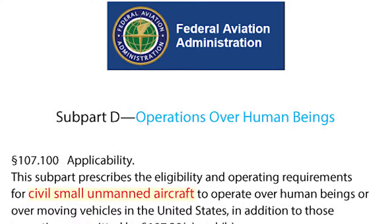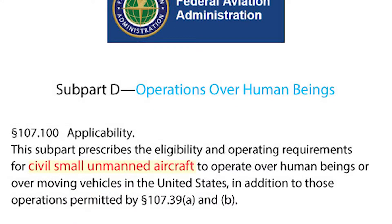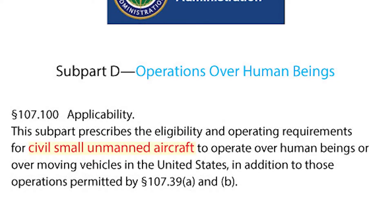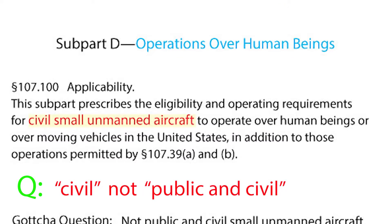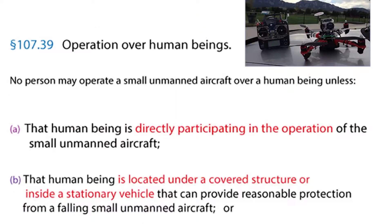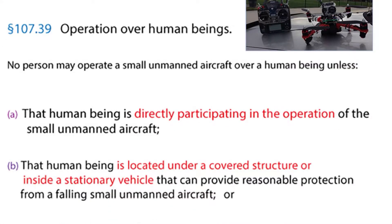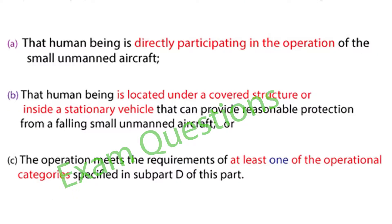This subpart prescribes the eligibility and operating requirements for civil and small unmanned aircraft to operate over human beings or over moving vehicles in the U.S. This is a gotcha question. No person may operate a small unmanned aircraft over a human being unless that human being is directly participating in the operation, is located under a covered structure or inside a stationary vehicle that can provide reasonable protection from a falling small unmanned aircraft, or the operation meets the requirements of at least one of the operational categories of Subpart D.